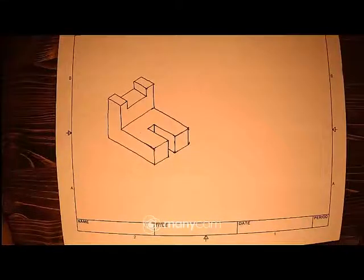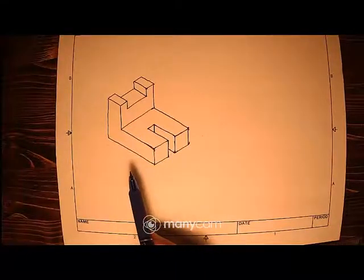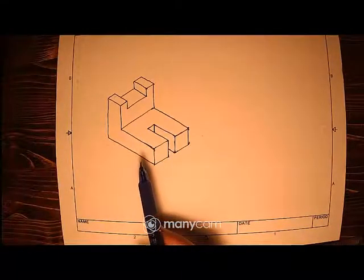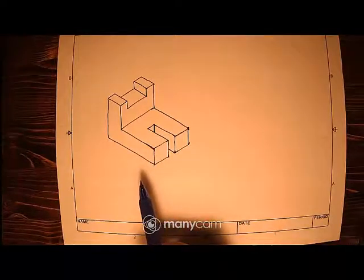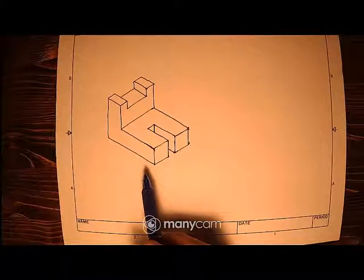So we're going to look at a couple of things today. One of the things we're going to look at is just taking an isometric like we have here on the paper and turning that into a multi-view. And we'll also look at going the other way around with it, going from a multi-view to an isometric.